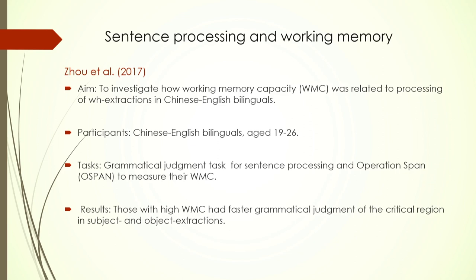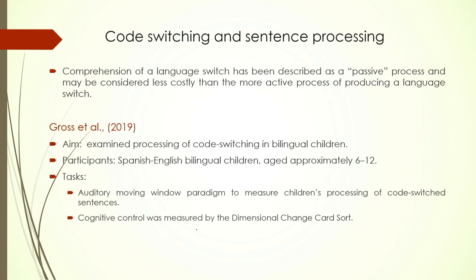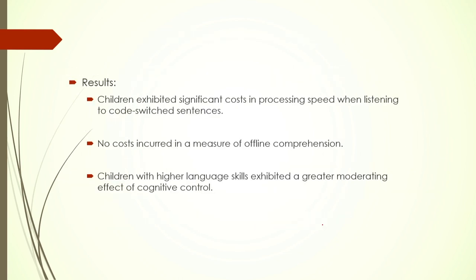Sentence processing has also been studied in connection with working memory. A recent study using grammaticality judgment and an operation span task found that participants with higher working memory capacity had faster grammatical judgment in the critical regions of subject and object extractions. Similarly, code switching and sentence processing were studied using a card sorting task, finding that children with higher language skill exhibited greater moderating effect of cognitive control.